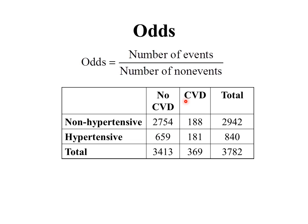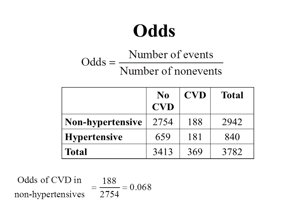We can consider having cardiovascular disease as an event and not having cardiovascular disease as a non-event. Let's calculate the odds of cardiovascular disease in non-hypertensives. We take the number of events, which is 188, divided by the number of non-events, 2,754. We do that arithmetic and we get 0.068 — those are the odds of having cardiovascular disease in this group of non-hypertensives.